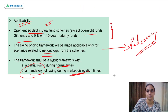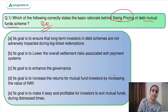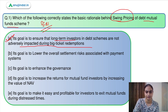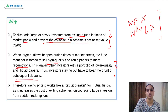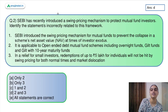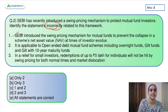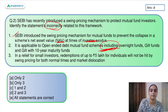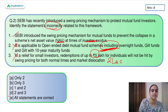Coming back to question one, the basic rationale behind swing pricing is to ensure that long-term investors are not impacted during big-ticket redemptions from other investors — so option A is correct. For question two, statement one is correct because the objective is to prevent collapse in NAV when investors are exiting. Statement two is incorrect because swing pricing applies to open-ended mutual funds excluding overnight and gilt funds. Statement three is also incorrect because the relief allowed is Rs 2 lakhs, not Rs 5 lakhs. So incorrect statements are two and three, making the answer option D.